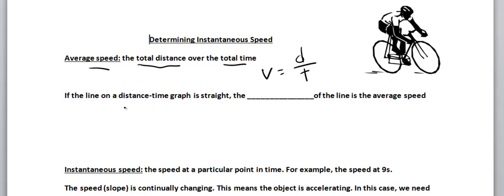So if the line on a distance-time graph is straight, so if this is a distance-time graph and we get a straight line, then the slope of the line is the average speed.